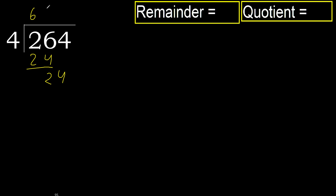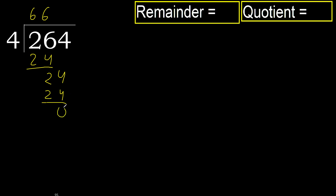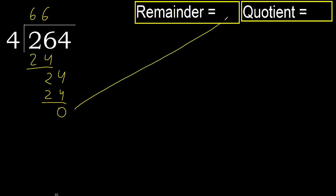24. 4 multiplied by 6 is 24 — 24 is not greater. Ok, 24 minus 24 is 0, next. There is no number, therefore finish.